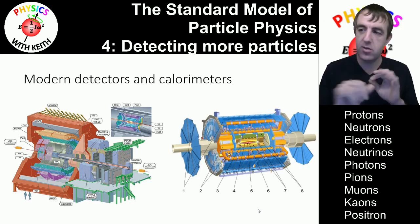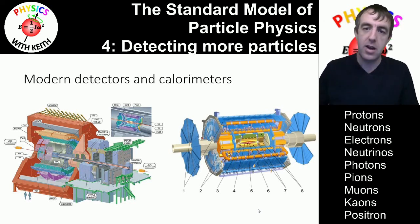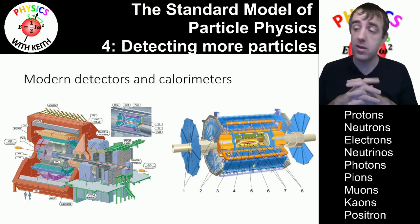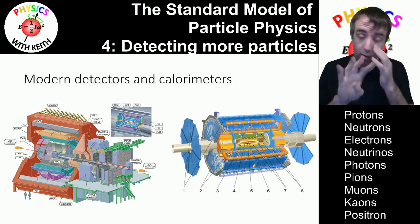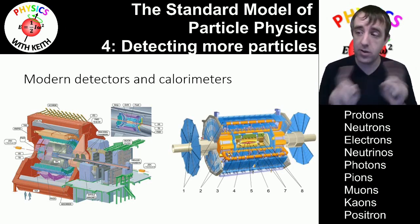Those charged particles leave a track that computers can analyse and there are detectors on the end of this one here, muon detectors, that can detect where the muons pass through the ends of the detector. Now at CERN, for example, they do something very clever.